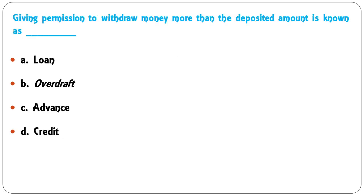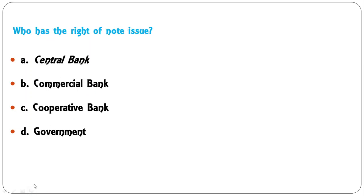The first question is: giving permission to withdraw money more than the deposited amount is known as — loan, overdraft, advance, or credit? If you have permission to withdraw more than the deposited amount, that is known as overdraft facility. B is the correct answer.